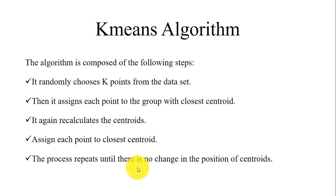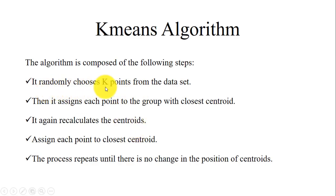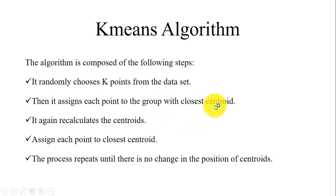K-means is an unsupervised learning technique, meaning it doesn't need any class parameter for analysis. The algorithm first randomly chooses k data points from the dataset as initial centroids, where k denotes the number of clusters. For example, if we have two clusters, it randomly picks two points as initial centroids. Then it assigns each remaining point to the group with the closest centroid by calculating the distance from each data point to each centroid. If a data point has minimum distance to centroid 1, it is grouped into cluster 1.